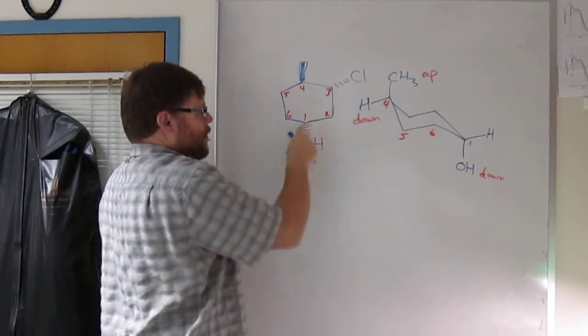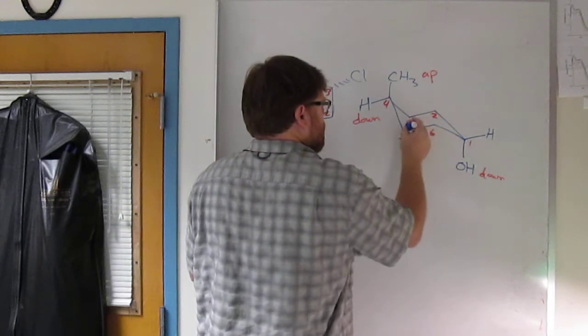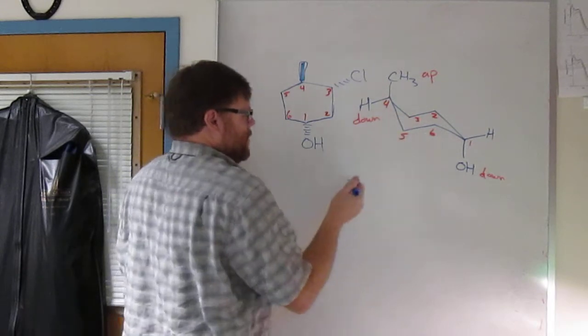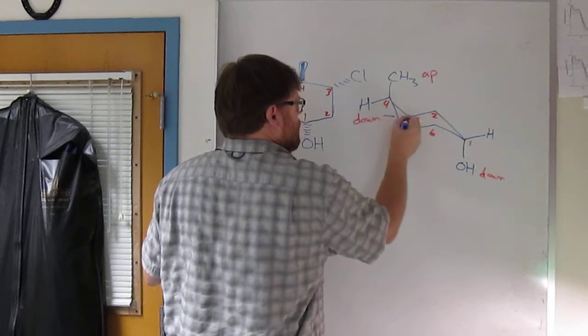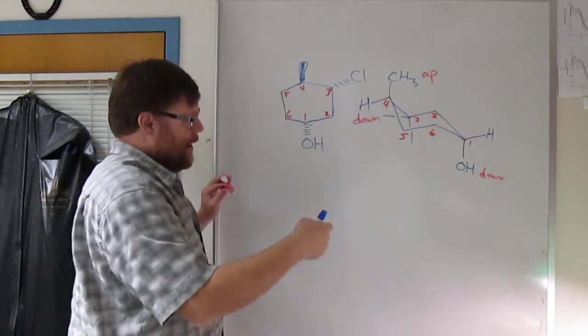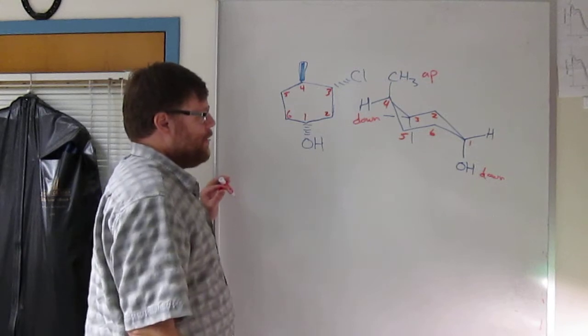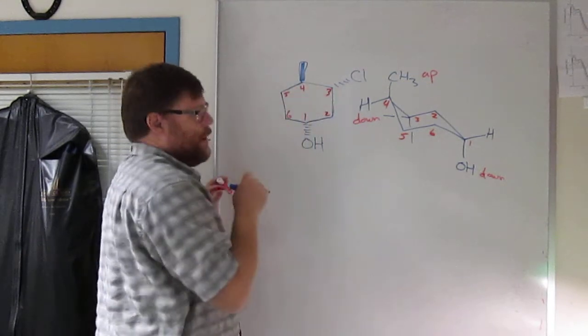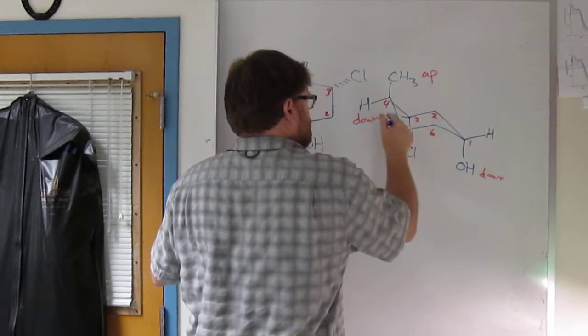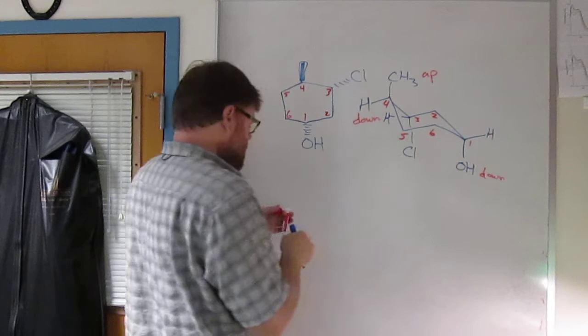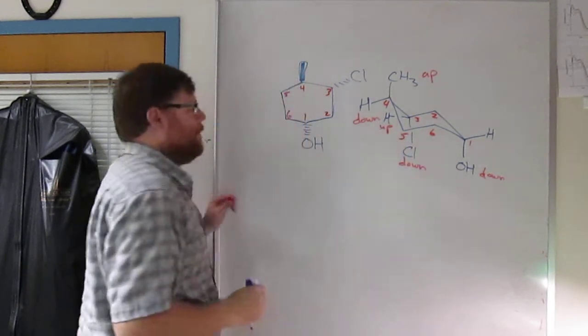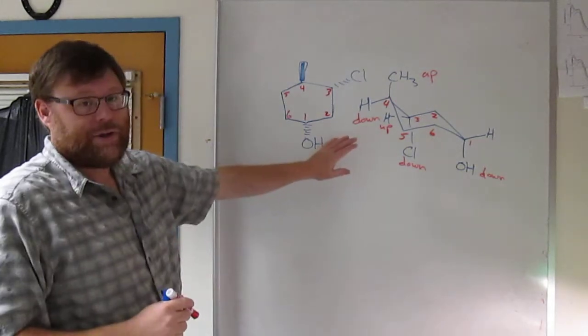You want the chlorine on carbon 3. One, two, three. The chlorine has to be on that carbon. Put your two substituents in. You have an axial that's down and an equatorial that's up on carbon 3. The chlorine is trans to the methyl. The methyl is up, so the chlorine has to be down. That makes the H up. So that is one chair.